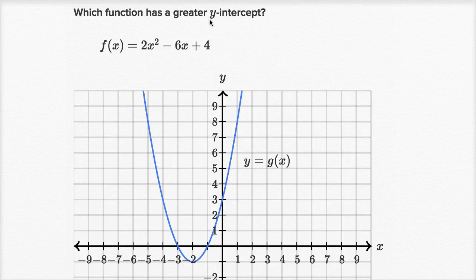We're asked which function has the greater y-intercept. The y-intercept is the y-coordinate when x equals zero. So f of zero, when x equals zero, the function is equal to, let's see, f of zero is going to be zero minus zero plus four, which equals four.